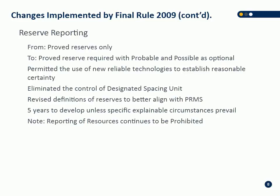They revised their definitions of reserves to better align with PRMS. Prior to the final rule, the SEC's proved reserve definition was a lower level of certainty than PRMS. When they brought the final rule in in 2009, they essentially adopted the PRMS reserve definitions — still slightly different, but much more closely aligned. They implemented a five-year timeline limit for undeveloped reserves. They still do not permit the disclosure of resources — you are not allowed to put resource volumes in the public domain.